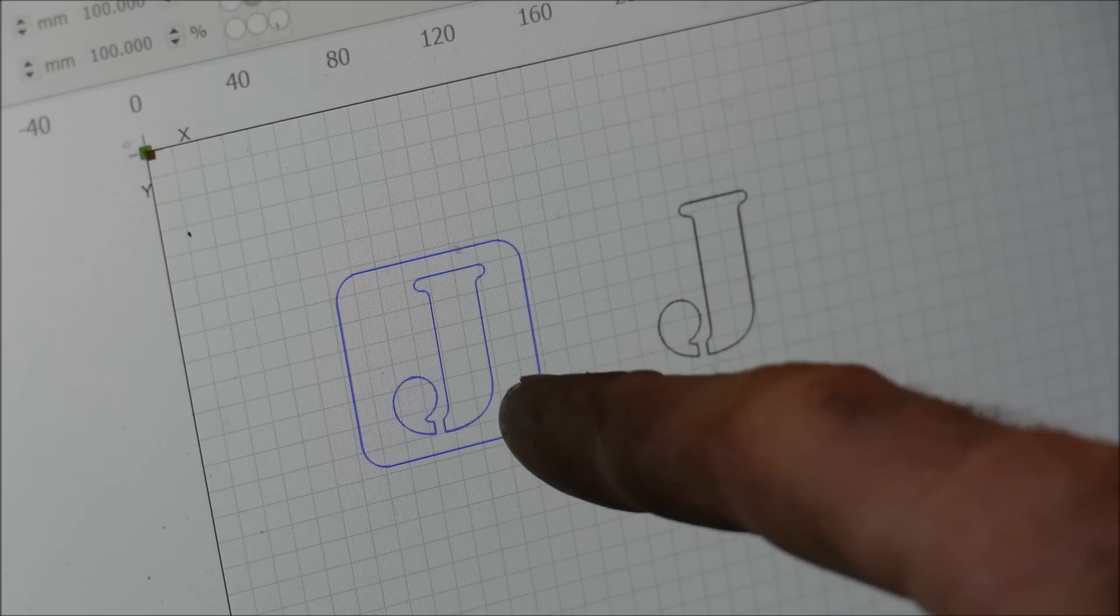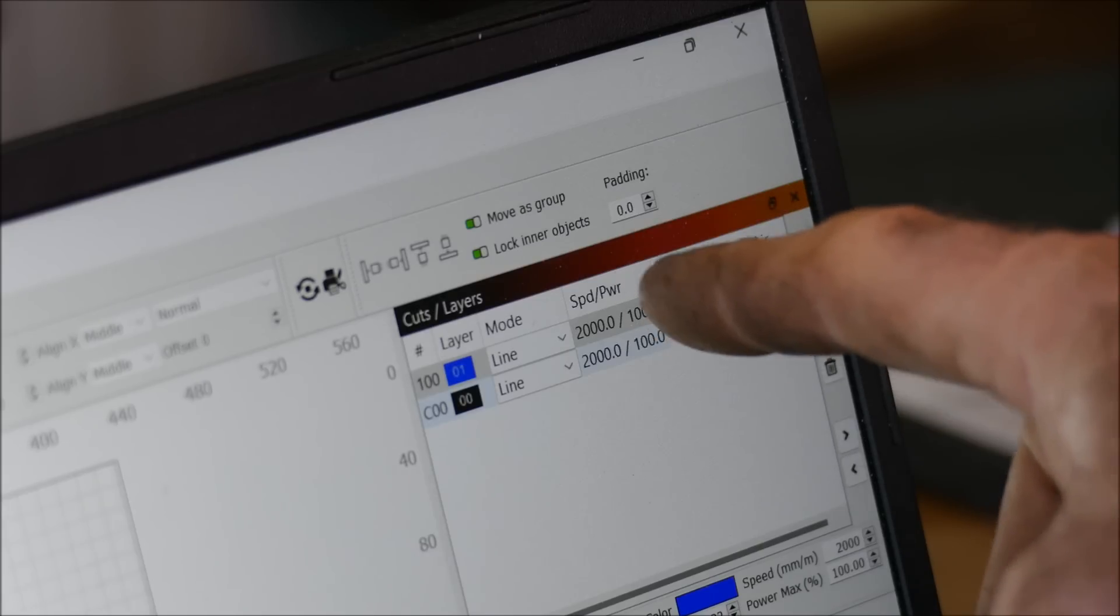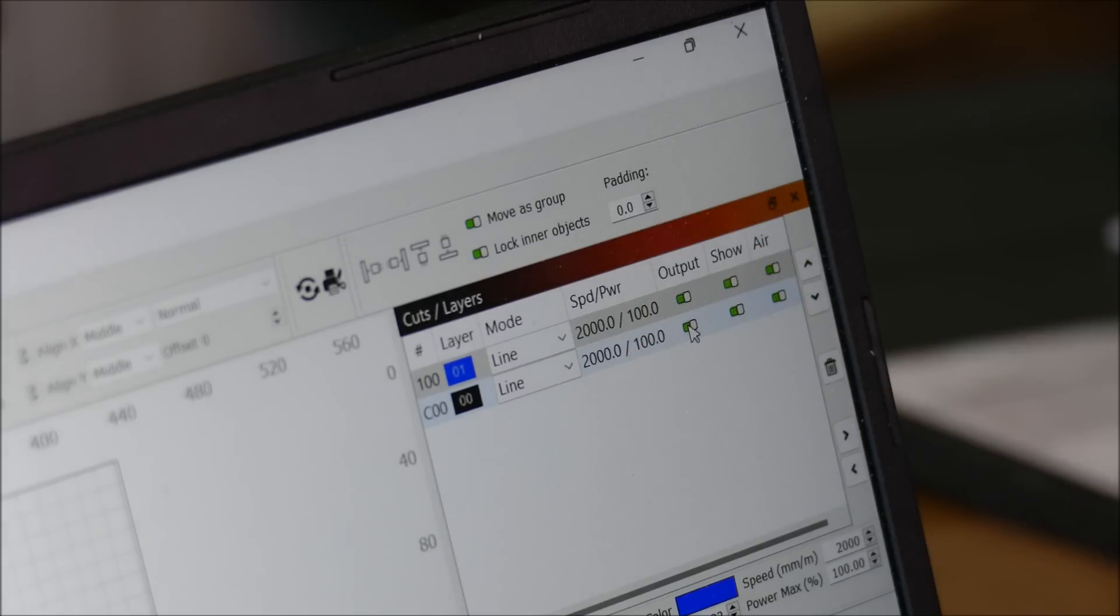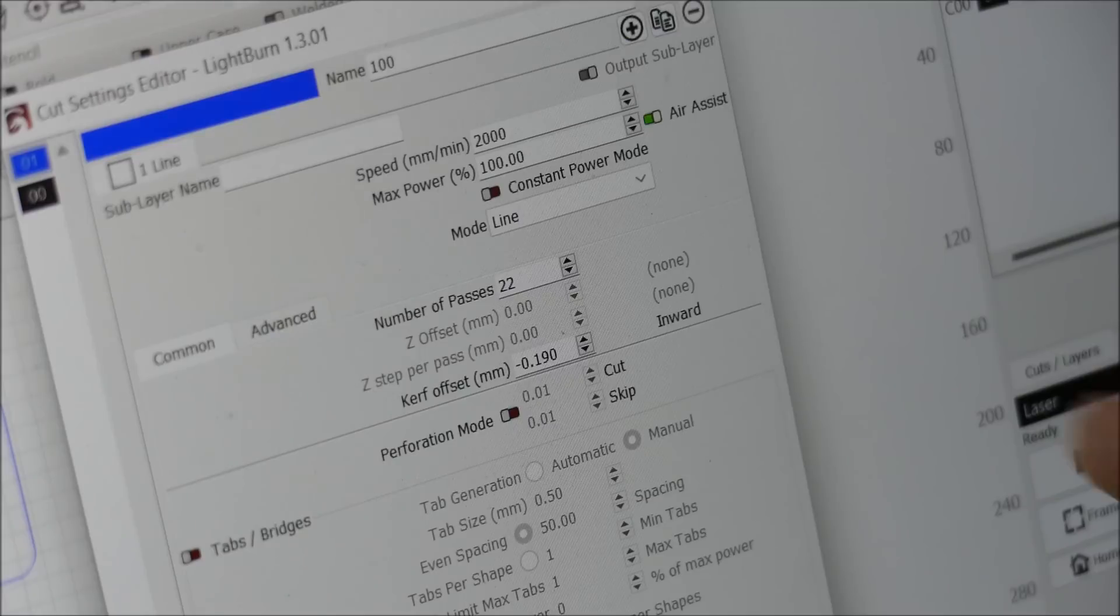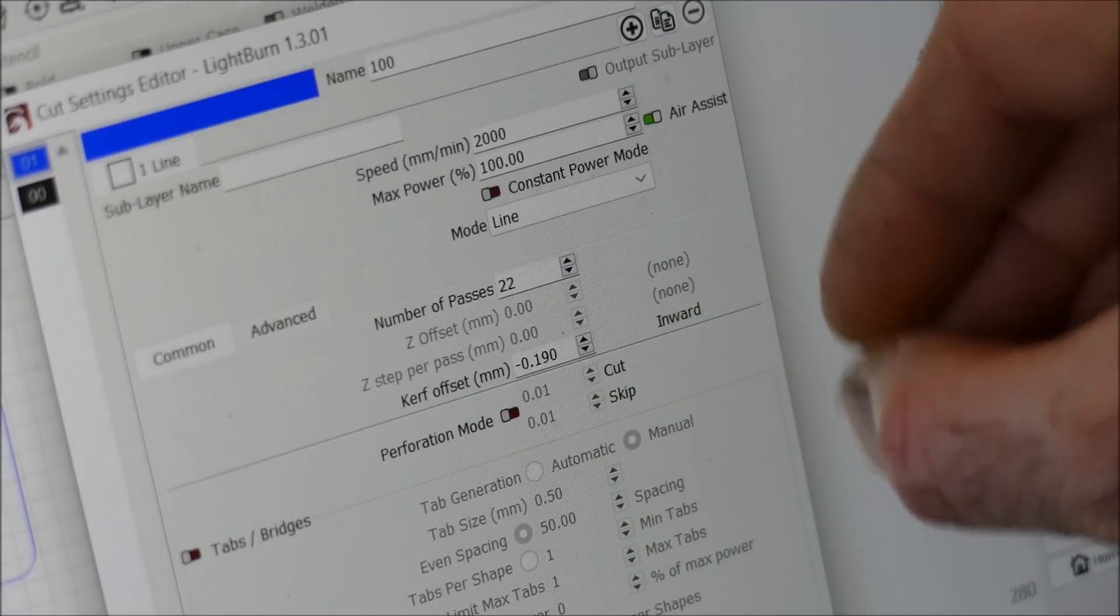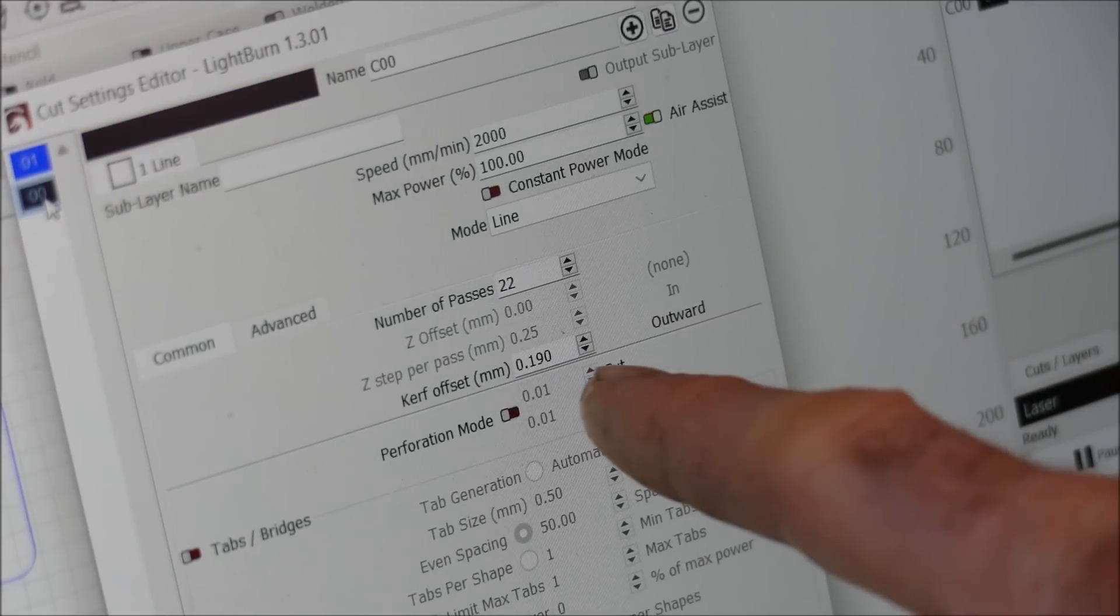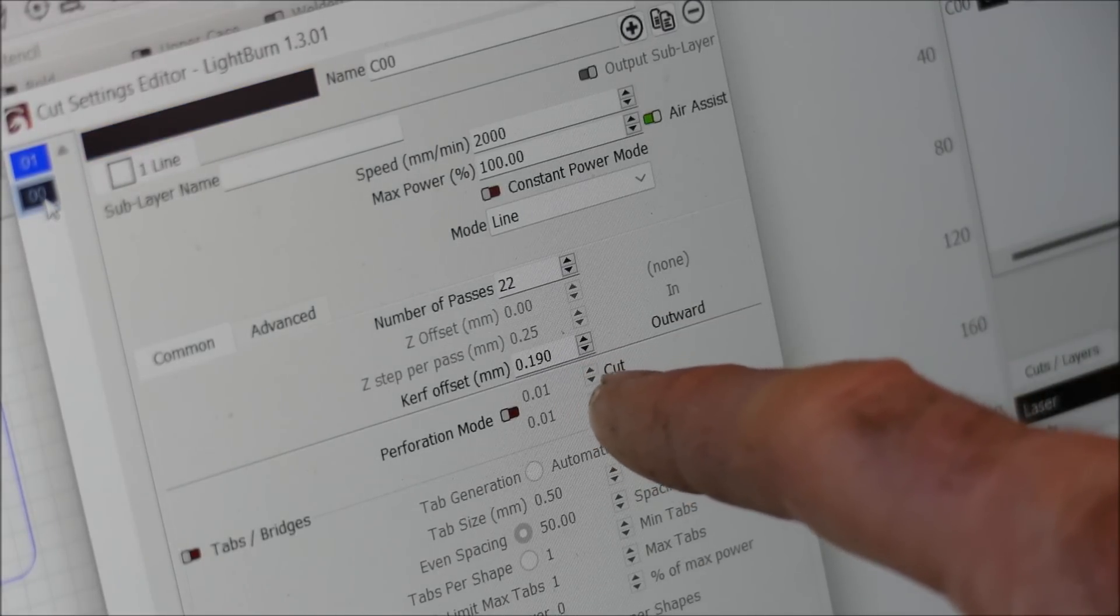So on LightBurn I've created the coaster here and the inlay here. And you'll notice that I've got them in different colors, so that's because I've got them on two separate layers. So I've got the layers here and if I double click the coaster, all right so now on this menu here we have kerf offset. That's basically the thickness of the laser beam. Mine is set to minus 0.19 and my inlay is set to plus 0.19.